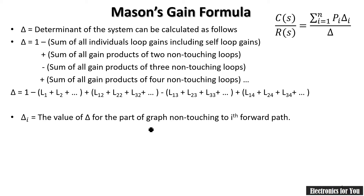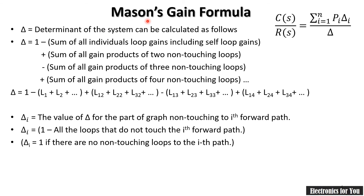Delta_i is the value of delta for the ith forward path, computed from the graph. If you are unfamiliar with individual loop gains, two non-touching loops, or three non-touching loops, those concepts are explained in a linked video available via the 'i' button or description. Delta_i equals one minus all loops that do not touch the ith forward path. If no non-touching loops exist for that path, then Δi = 1.